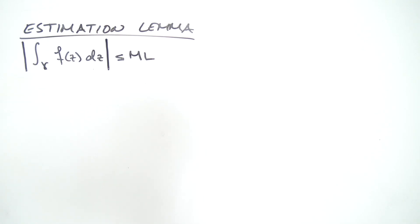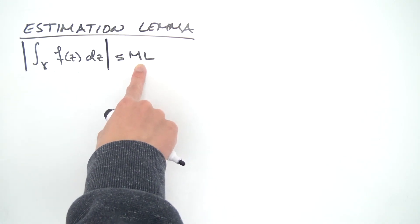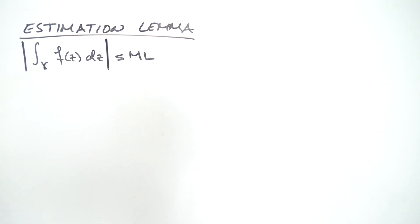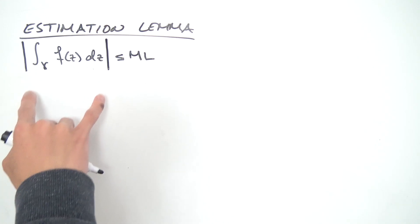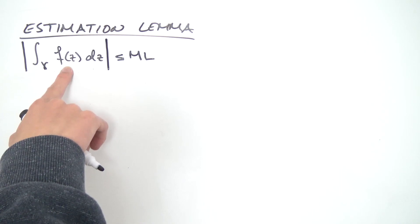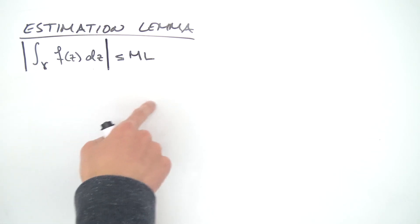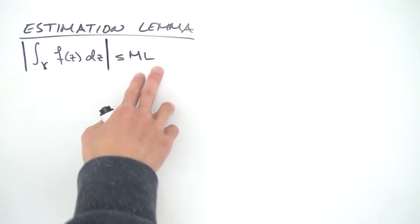Today we're going to be proving the estimation lemma, also known as the ML inequality. It says that the absolute value of the integral over some curve gamma of a complex function f(z) can be bounded above by M times L.